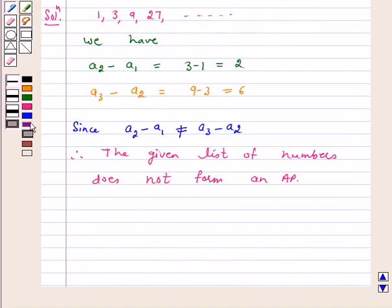Hence, the answer for this question is that 1, 3, 9, 27 do not form an AP. That is, no is the answer for this question.